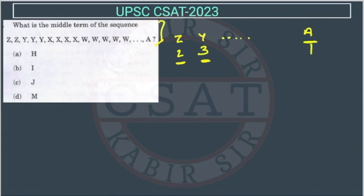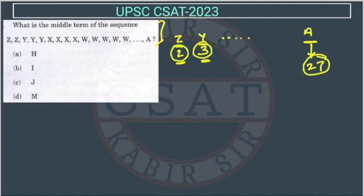Because they have reversed the alphabet, Z will be at position one. Since Z comes twice and Y comes thrice, similarly A will come 27 times — one extra because we are reversing it, and this one extra gives 27 repetitions for A.